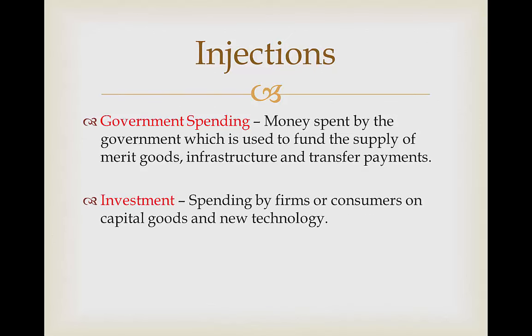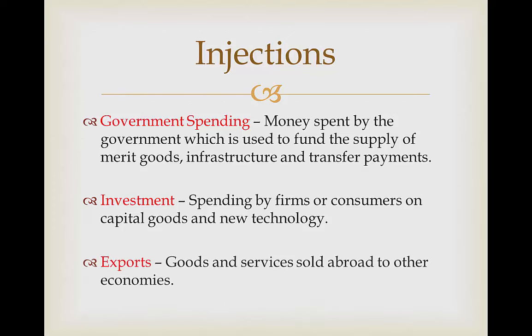Investment is spending by firms on capital goods and new technology. By having firms spend more on technology and capital goods, we're going to increase our productive efficiency, and ultimately aggregate demand is going to shift because we're able to produce more goods and services with improved technology and more capital goods. Exports are simply the goods and services sold abroad to other economies, which are originally produced domestically in the UK.